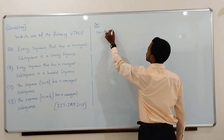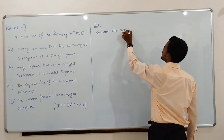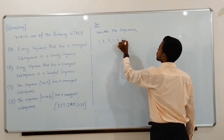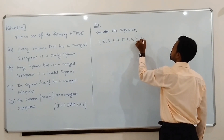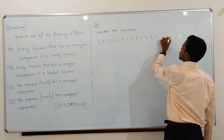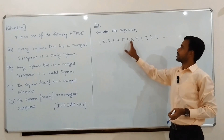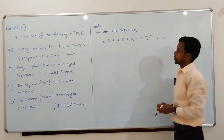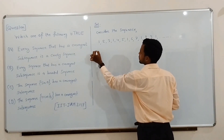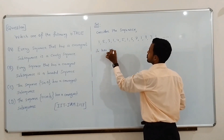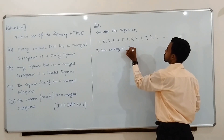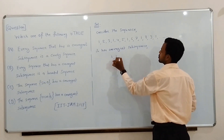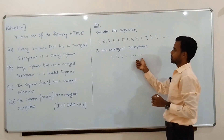Consider the sequence. Clearly, 1 is repeated infinitely many times in this sequence, in the same pattern, that is in the same order. Thus, this sequence has a convergent subsequence, which is a constant sequence converging to 1.